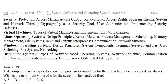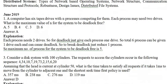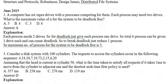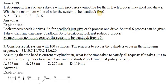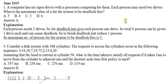In June 2019, this was the question: a computer has six tape drives with n processes competing for them. Each process may need two drives. What is the maximum value of n for this system to be deadlock free? This comes under CPU scheduling, and deadlock will be avoided using the banker's algorithm. They are saying six tape drives with n processes, and each process needs two resources.